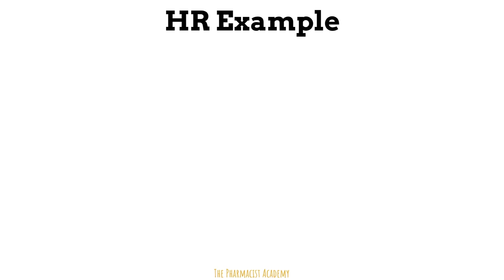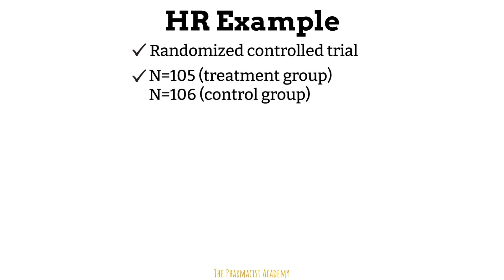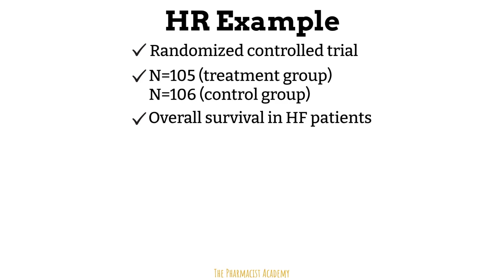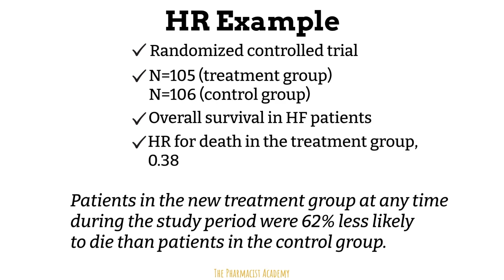Now let's look at an example. We have a randomized control trial with 105 people in the treatment group and 106 in the control group. The purpose of this trial was to assess the overall survival in heart failure patients. The hazard ratio for death in the treatment group was 0.38, which means that patients in the new treatment group at any time during the study period were 62% less likely to die than patients in the control group.